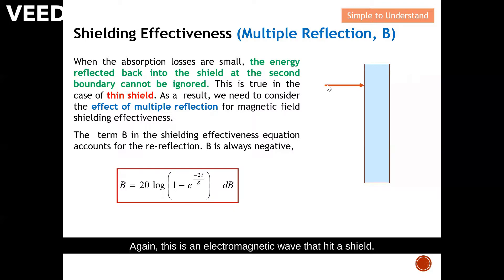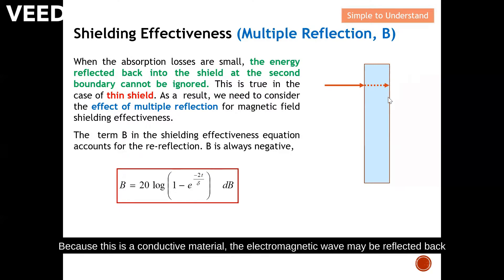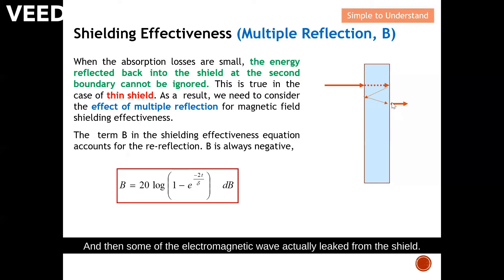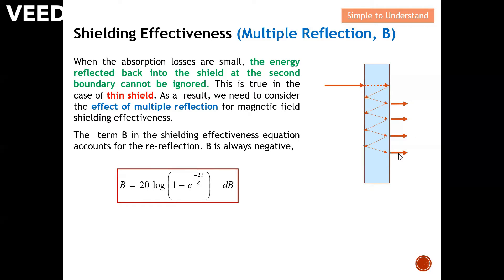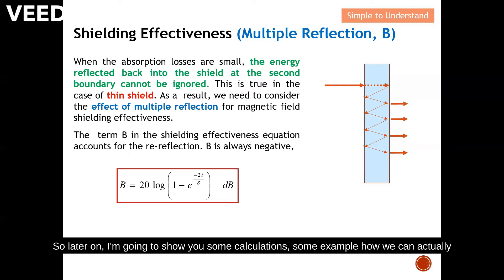Let's look at what multiple reflection is. An electromagnetic wave hits a shield; absorption occurs, and the wave enters the second boundary. Because this is a conductive material, the electromagnetic wave may reflect back to the first boundary, and then reflect back again. There can be multiple reflections, and as a result, a certain fraction of the electromagnetic wave manages to penetrate through the shield.